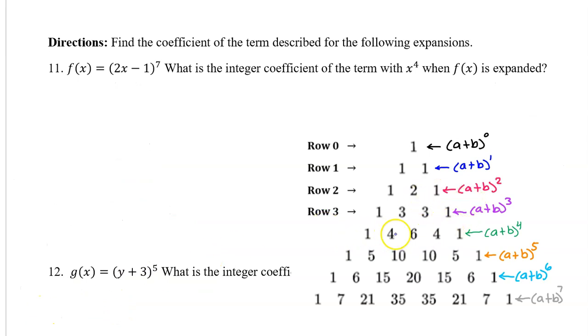Each row gives you the coefficients of an expanded binomial. Notice that the very top row is degree 0. And then it goes 1, 2, 3, 4 after that.